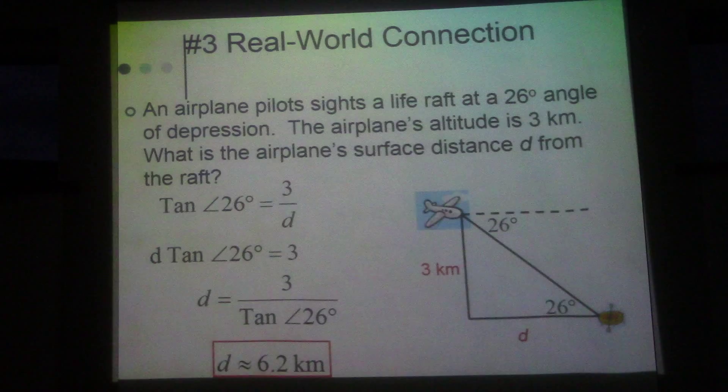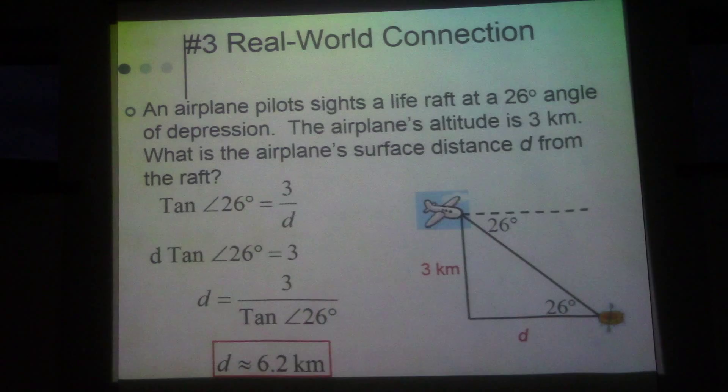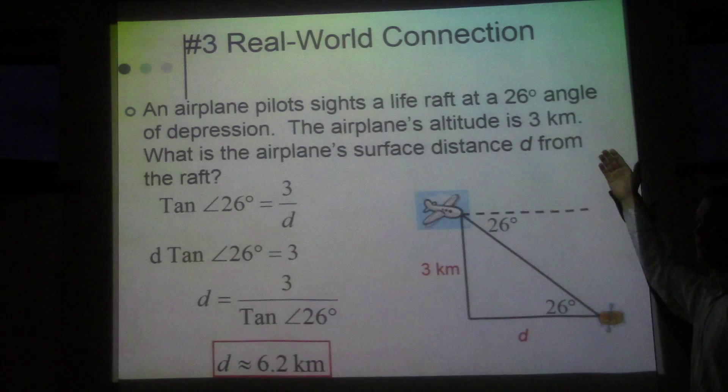So then we want to know, we know the height, the plane above the earth is 30 kilometers, right here. We want to know what is this distance down here. Now a couple things, again, what we did just before. This line and this line, these two lines are parallel, so these two angles are alternate interior. So we want to find out for d, so we look at, this would be opposite over adjacent. So that would be tangent ratio. So we go opposite over adjacent, multiply by d to get d out of the denominator, then divide by tangent 26, and we get it equal to about 6.2 kilometers.